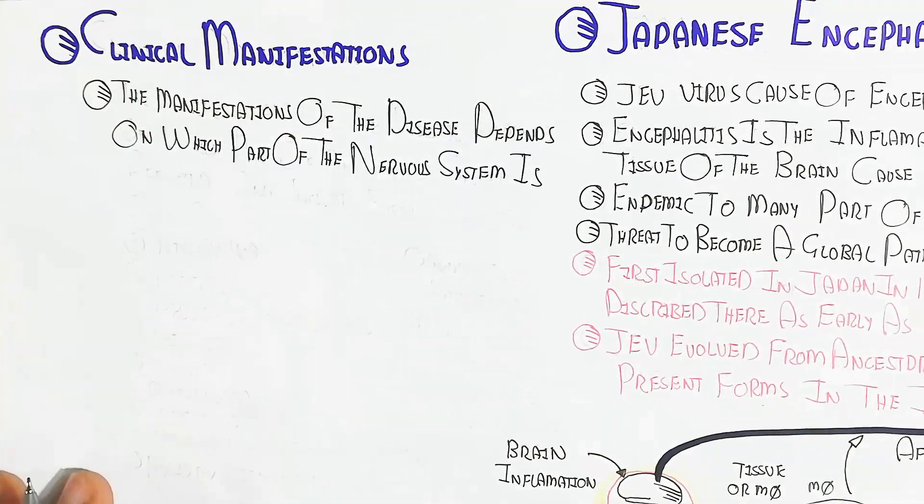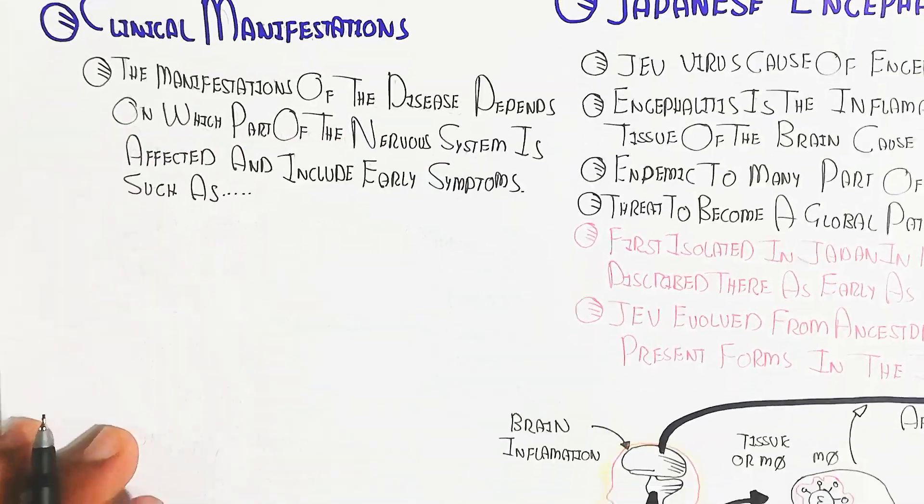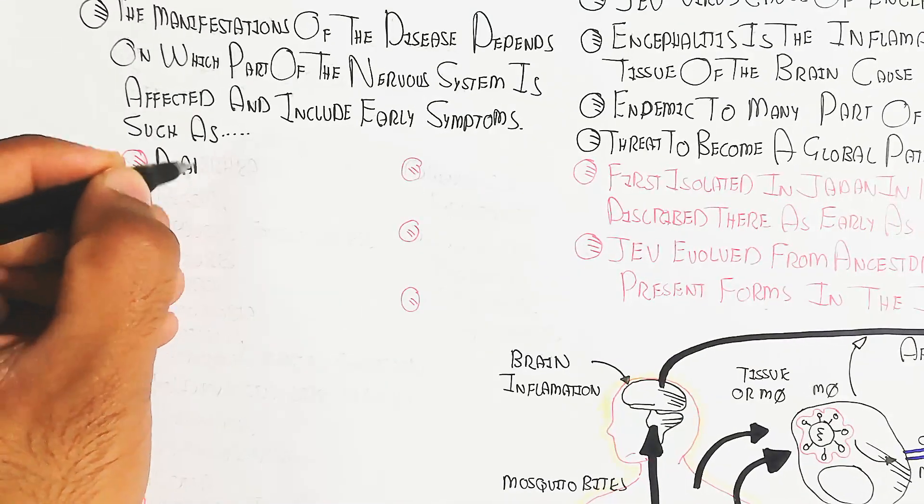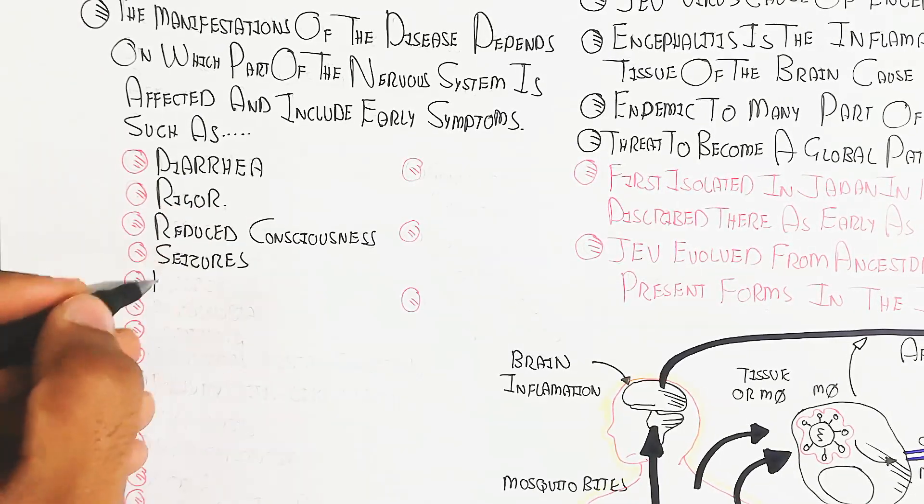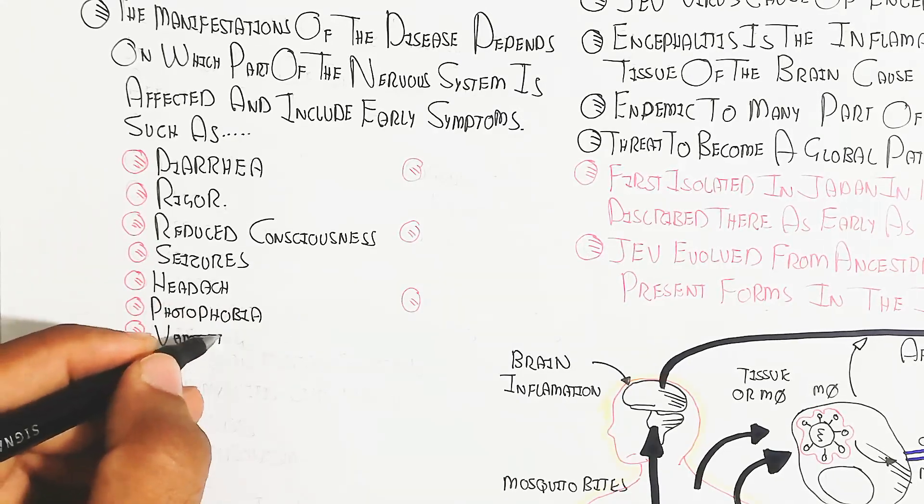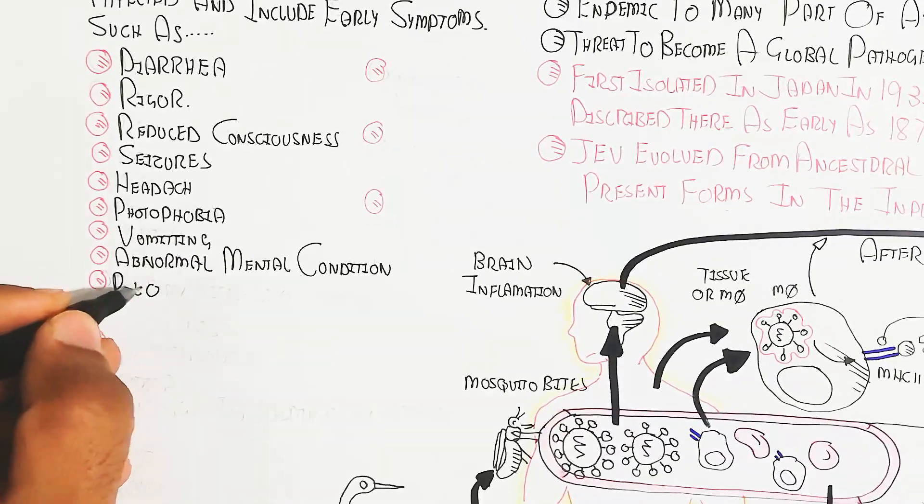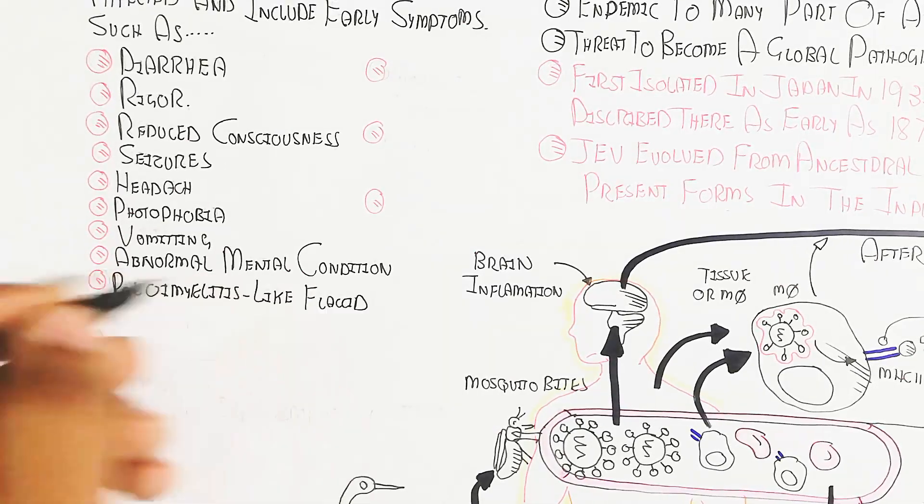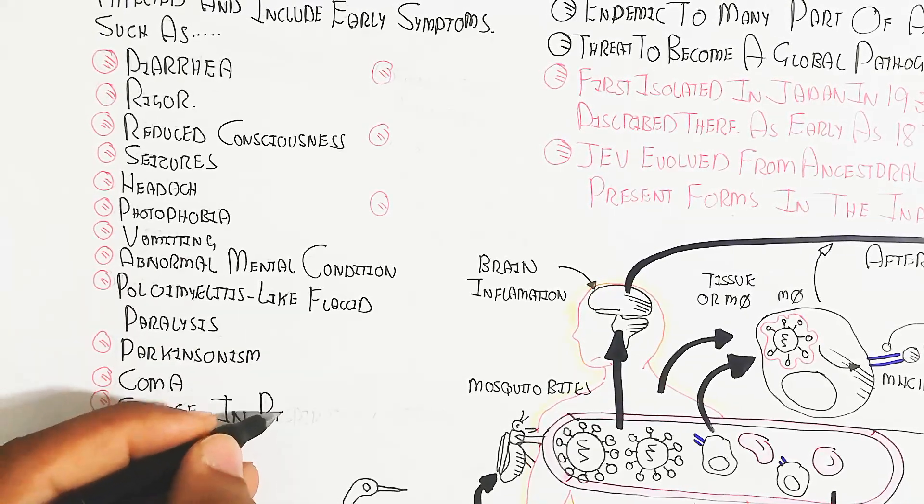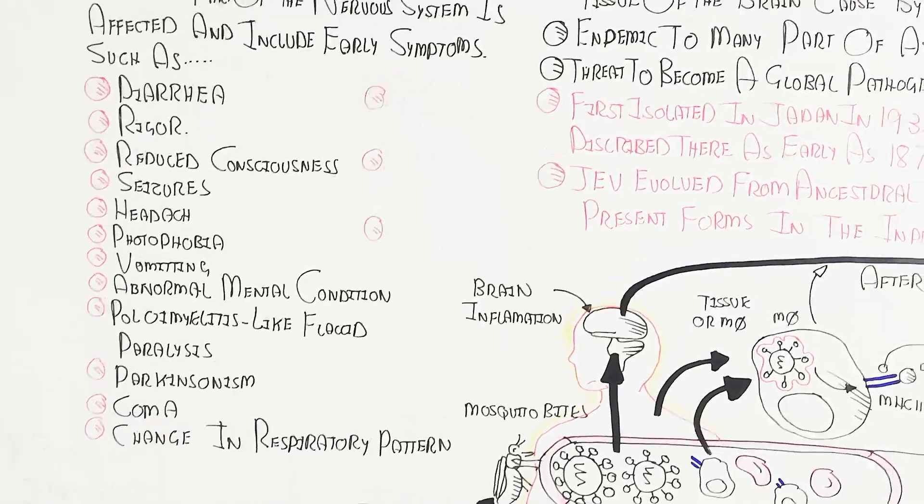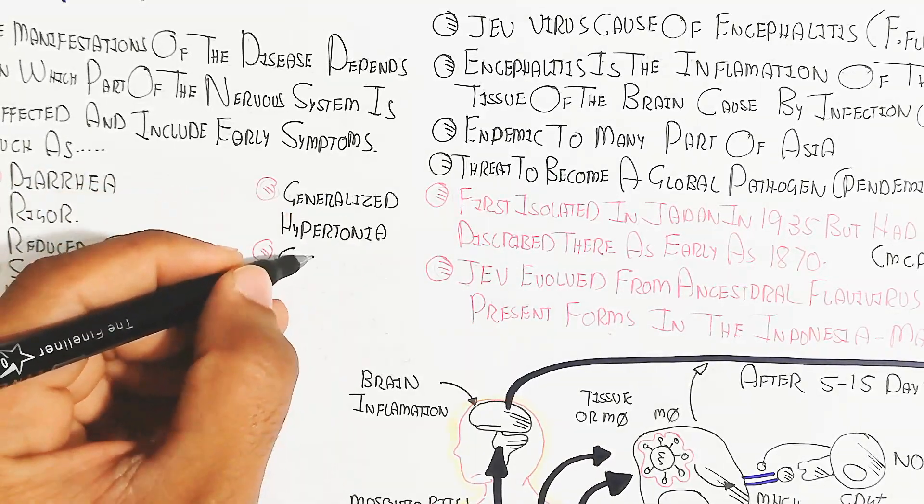Clinical manifestation depends on which part of the nervous system is affected and includes early symptoms such as diarrhea due to non-absorption of sodium and water retention, leading to hyponatremia which can cause kidney disease and rigor. Other symptoms include reduced consciousness, seizure, headache, photophobia (fear of light), vomiting, abnormal mental condition, poliomyelitis-like flaccid paralysis, parkinsonism, coma, and changes in respiratory pattern. Generalized hypertonia, cogwheel rigidity, and abnormal movements also occur due to encephalitis.